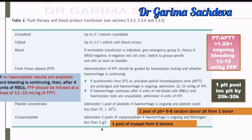Now moving to PPH guidelines. In cases of PPH, give crystalloids up to 2 liters and colloids up to 1.5 liters. For blood, similarly start O-negative blood until group-specific blood is available, then switch to group-specific. For fresh frozen plasma: give if PT/APTT is more than 1.5 times normal, at a dose of 12 to 15 ml per kg. Importantly, for every 4 units of PRBCs, give 4 units of FFP — this is a 1:1 ratio, in contrast to APH where for 6 units of PRBCs you gave 4 units of FFP.